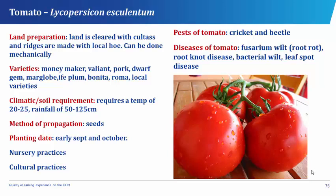The pests that attack tomato are the cricket and beetle, while the diseases suffered by tomato are the Fusarium wilt or root rot, the root knot disease, the bacterial wilt, and the leaf spot disease.